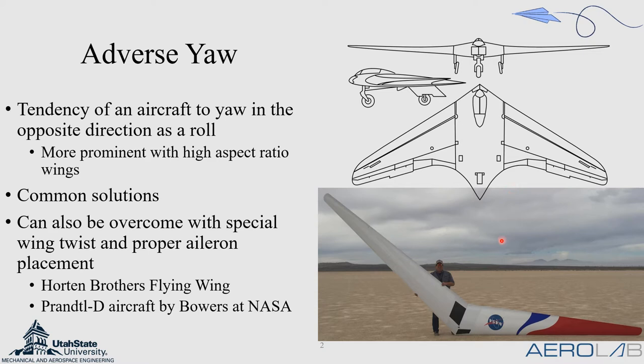More recently, Al Bowers at NASA with his team developed the Prandtl-D aircraft, which is a flying wing, and they proved experimentally that they were able to overcome adverse yaw using this method. And this is the topic of research that I will be presenting.